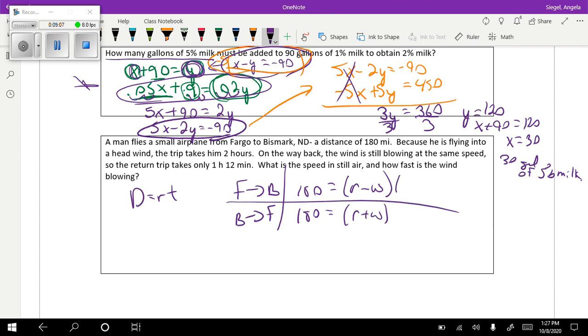The time, the first rate is going to be 2 hours, and then coming back, be careful, because it's 1 hour 12 minutes. This ends up being, if I take 12 divided by 60, that's 0.2, so that ends up being 1.2. Just be pretty careful about that.